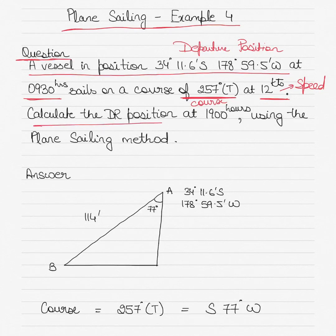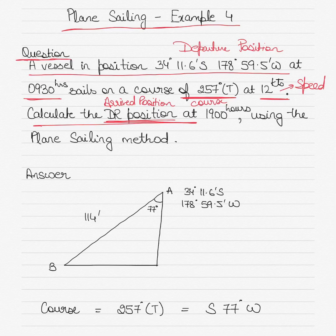We need to calculate the DR position — the arrived position. It is a DR position because it is based on estimated course and speed and does not account for the effects of wind and current. So the actual position at 1900 hours may differ, but this is the DR based on estimated course and speed.